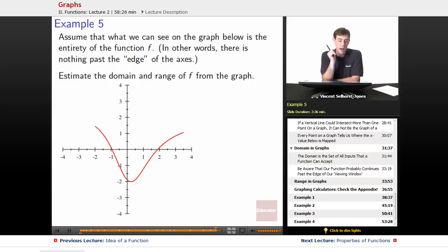Assume that what we can see on the graph below is the entirety of the function f. In other words, there is nothing past the edge of the axes. We're looking through that window, but we've been told there's nothing interesting past the edges of the window. So this graph here is the entirety of the function f. Now we want to estimate the domain and range of f from the graph.